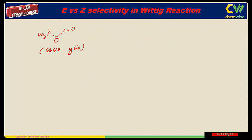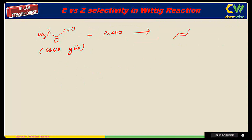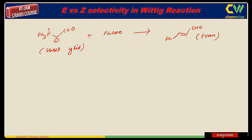For normal ylides, the negative charge is stabilized over the phosphorus atom. But when we say 'stable ylide,' it mostly means the charge delocalizes over the carbon ylide. So if we have a stable ylide reacting with an aldehyde, the product obtained will be trans in nature — a trans product. For stable ylides, we get the trans product; for normal (unstable) ylides, we get the cis product.